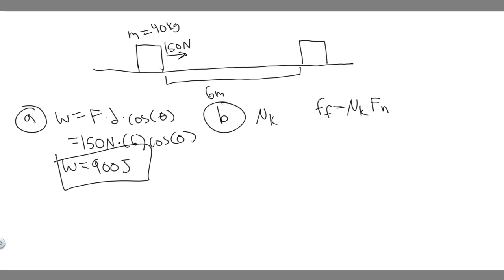The thing about this problem is they tell us that the crate is going to move at a constant speed. That basically means this applied force has to be equal to the frictional force, because these two forces have to be equal if it's going to move at a constant speed. So we know the frictional force is just going to be equal to 150. And what about F sub n, the normal force?